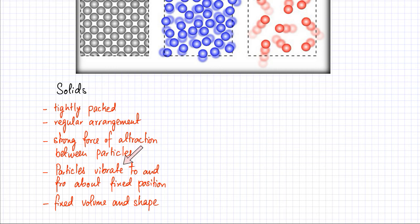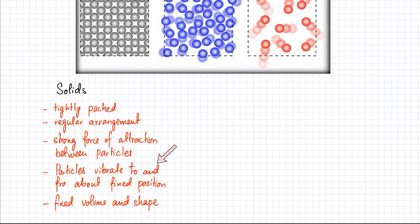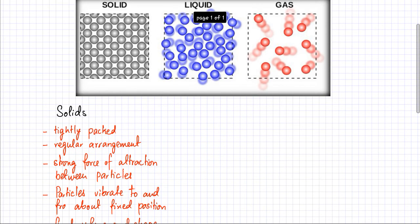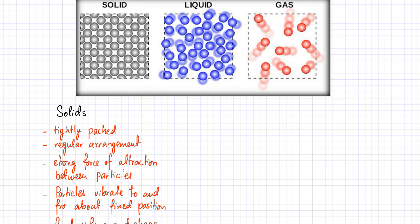Another property of solid state is that particles vibrate to and fro about a fixed position. A particle cannot move much because it's strongly held by all the surrounding particles attracting it. So what a particle can do is vibrate about its fixed position, but it can't really move much. Solid state always has a fixed volume and a fixed shape — its shape doesn't change and its volume doesn't change much. Solids are not very compressible; they retain their shape and volume.